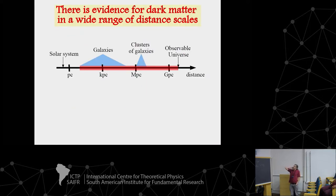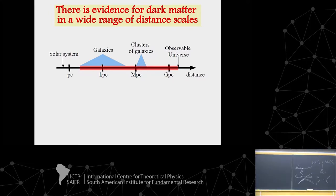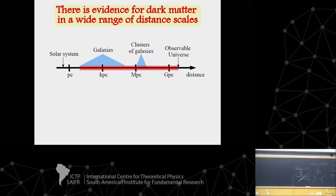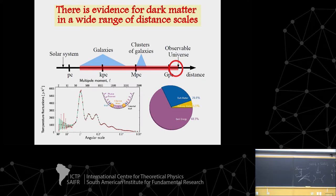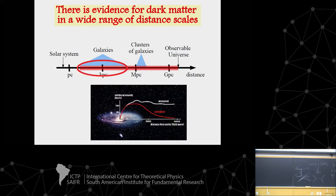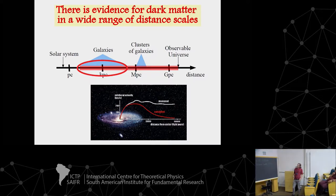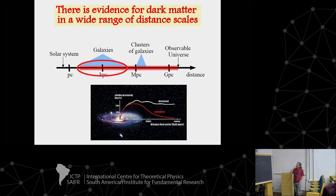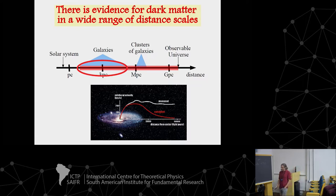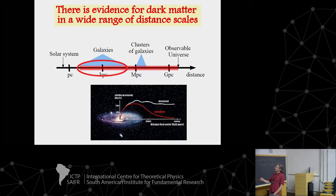There is no need to emphasize that we know the existence of dark matter at many different scales: at the scale of the whole universe from the CMB, at the scales of clusters of galaxies, and at the scales of galaxies. We know about dark matter in big galaxies such as M87, and also in small galaxies — dwarf galaxies such as Ursa Minor, Draco, etc. — that have sizes of about 100 parsec.